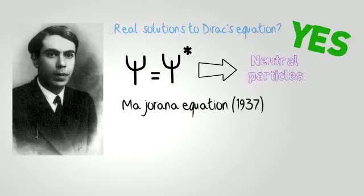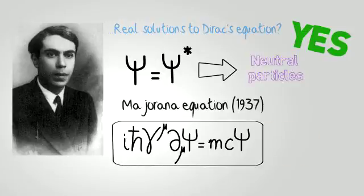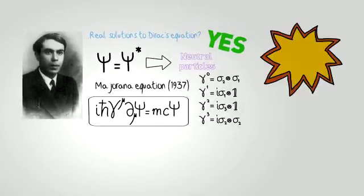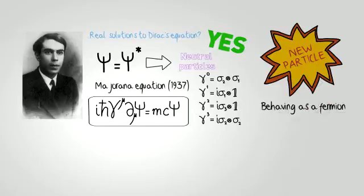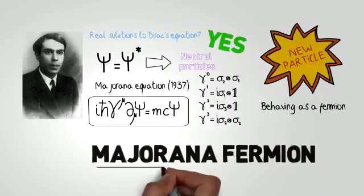In 1937 Majorana proposed his homonym equation, written here in the covariant formulation, where the gamma matrices of Dirac equation now take this particular form, the Majorana representation. Instead of having 4, now we have 2 complex coupled equations. The solution to the Majorana equation was a completely new particle, which had to be inevitably a fermion, because it was obtained from Dirac's equation. We all know it as the Majorana fermion.